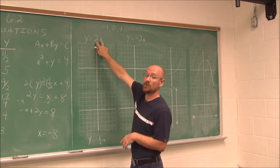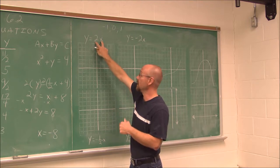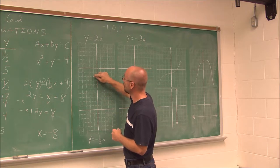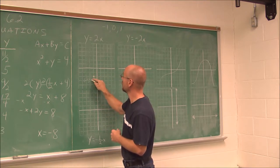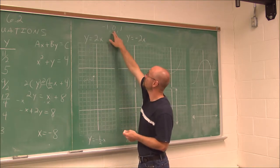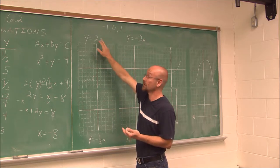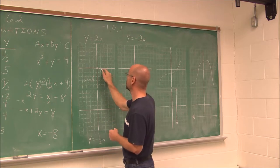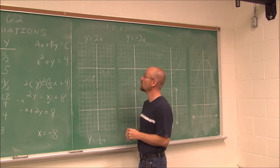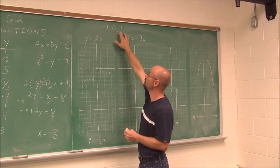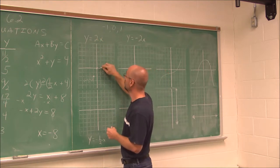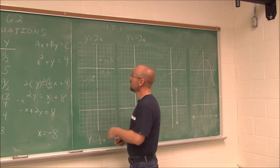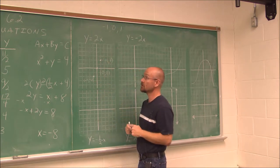For y equals 2x, if x is negative 1, negative 1 times 2 is negative 2 — so the point is negative 1, negative 2. If x is 0, zero times anything is 0, so y equals 0 — that is the origin, 0, 0. When x is 1, 2 times 1 is 2 — so the point is 1, 2. We can see they all line up in a straight line — hence the term linear equation.